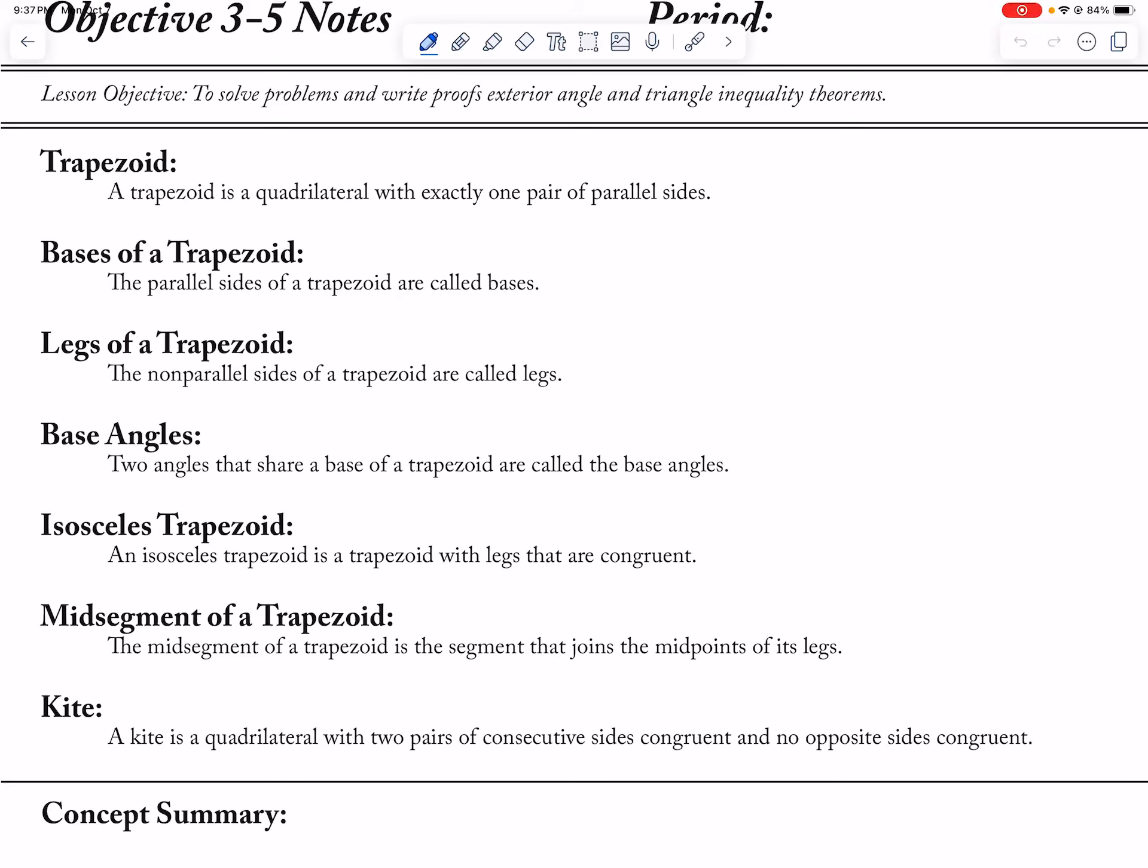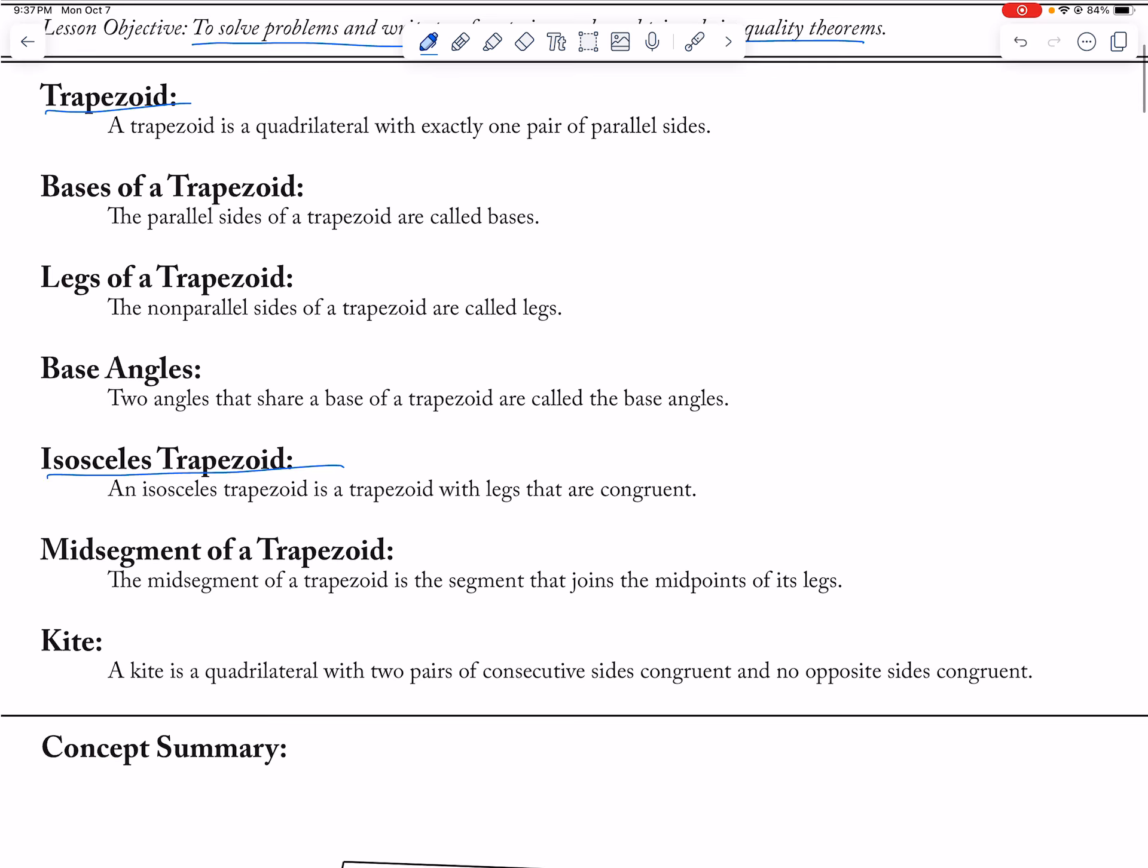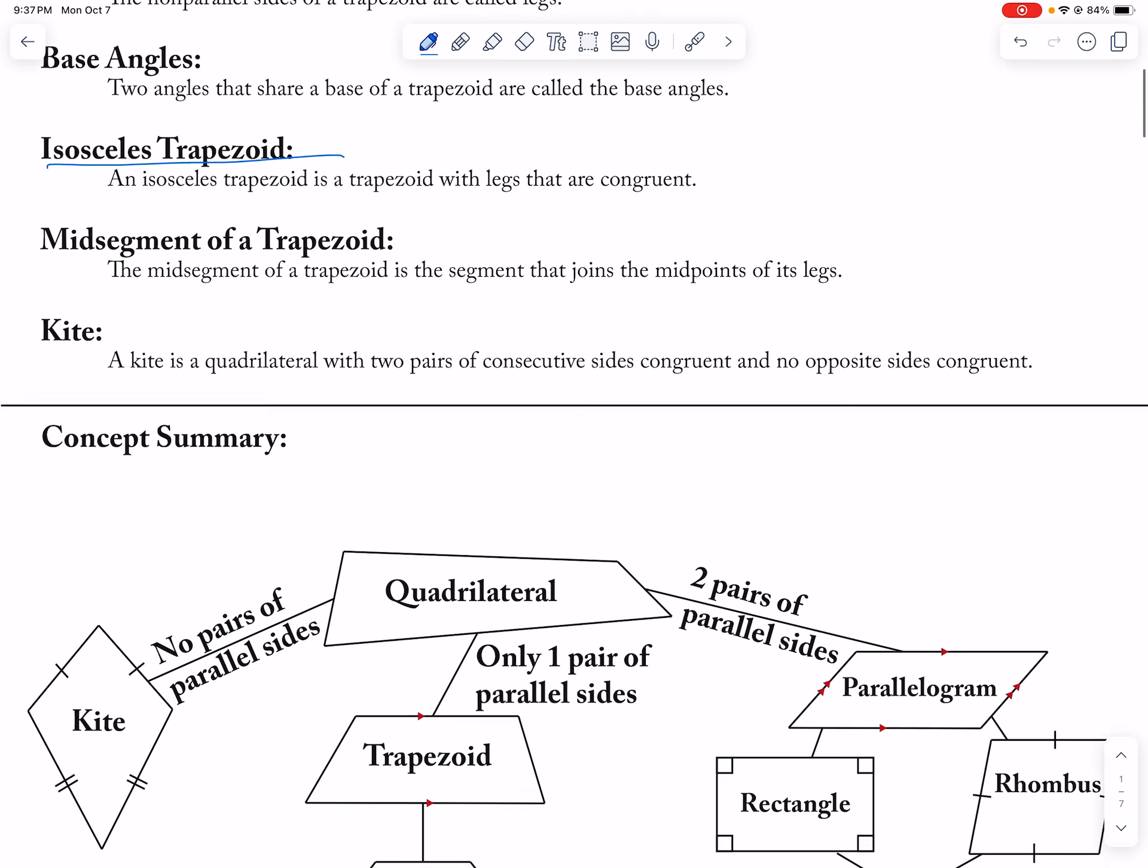Okay, so let's go ahead and take a look at this lesson. So this lesson, the lesson objective is wrong. It's about trapezoids. And an isosceles trapezoid is a trapezoid with the legs that are congruent. Then there's a mid-segment of a trapezoid.